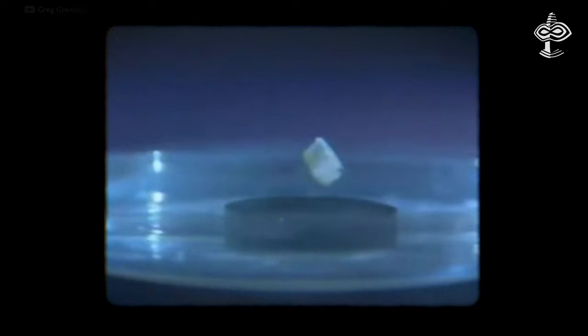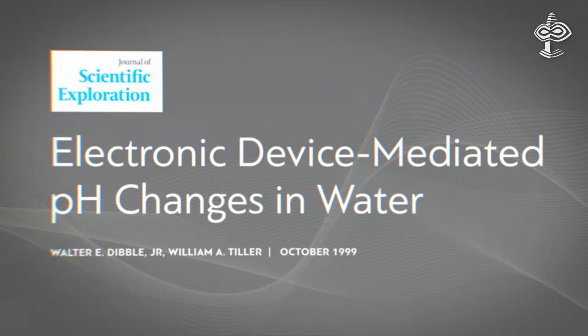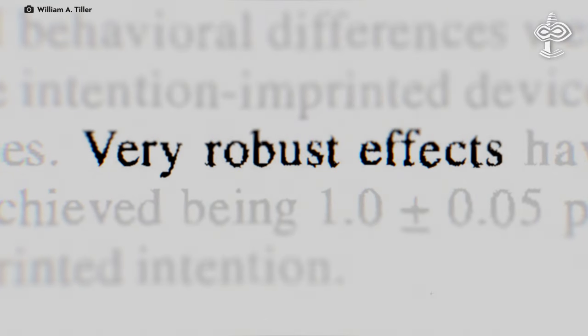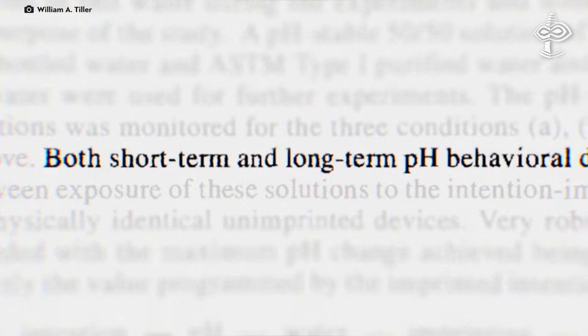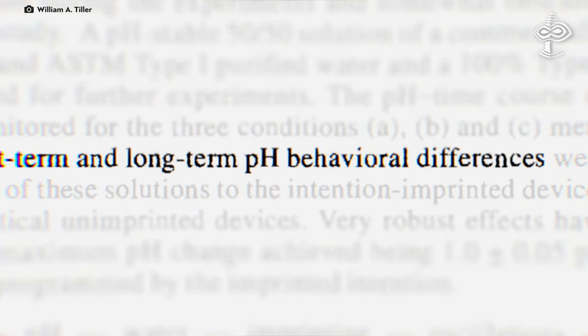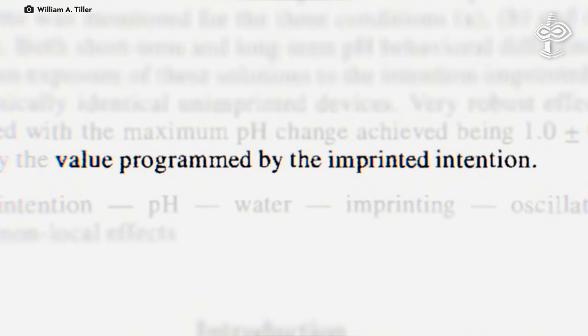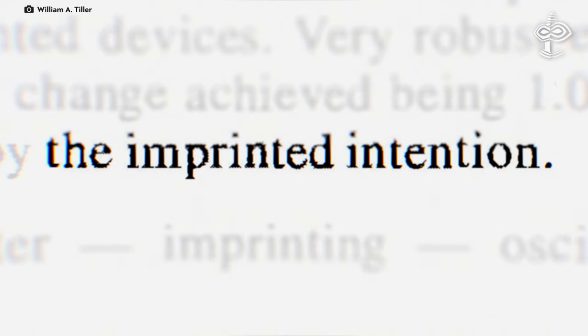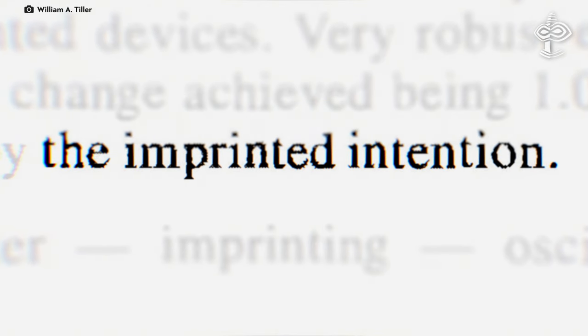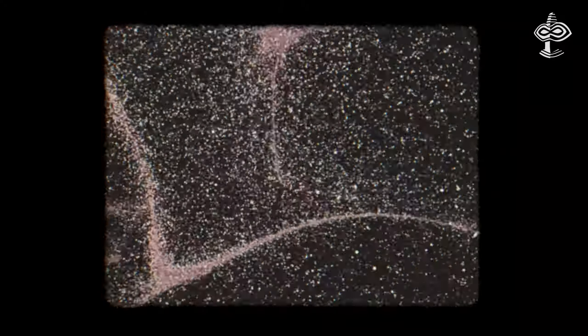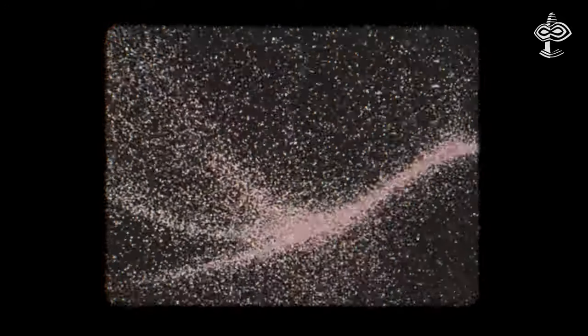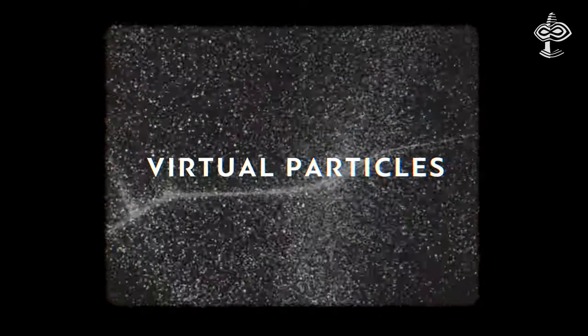There is a growing body of experimental data and evidence that supports the idea that intention can exert a tangible influence over physical systems. In the notable study of Tiller and Dibble, they observed changes in environmental properties like temperature and pH in laboratory settings where intention-imbued instruments were used. These changes seemed to indicate a shift in physical reality within the lab, potentially due to ordering effects exerted on virtual particles in an unseen domain.